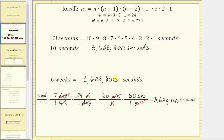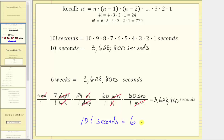And because 10 factorial seconds equals 3,628,800 seconds and so does six weeks, we have just verified that 10 factorial seconds is equal to exactly six weeks. Probably not the most useful math fact, but hopefully somewhat interesting. Thank you for watching.